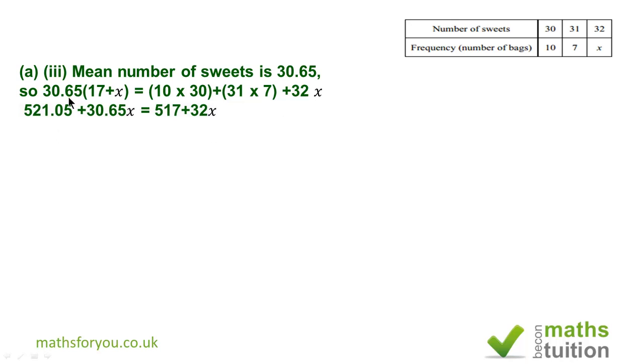If you open up the brackets we have something like 521.05 plus 30.65x is equal to 517 plus 32x. Then you solve for x, you should get x is equal to 3.